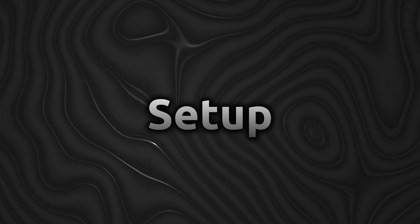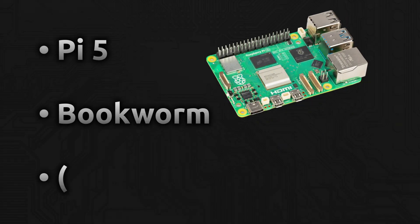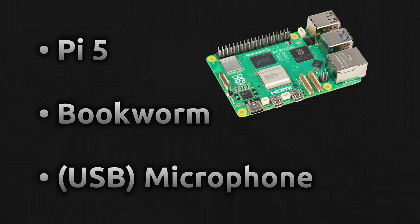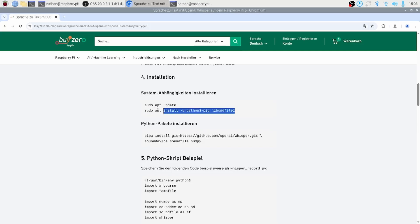Getting set up. All you need is your Pi with its operating system, a USB microphone that ALSA recognizes, and Python with PIP. You'll install Whisper and a couple of audio libraries in one go, then you're ready to record.